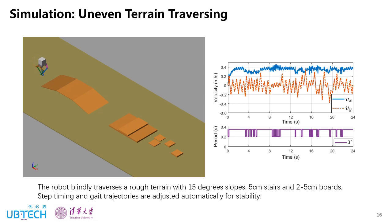And here is the uneven terrain traversing simulation. The robot blindly traverses a flat terrain with 15-degree slopes, 5-centimeter stairs and 2-5-centimeter boards. The step timing and gate trajectories are adjusted automatically for stability.